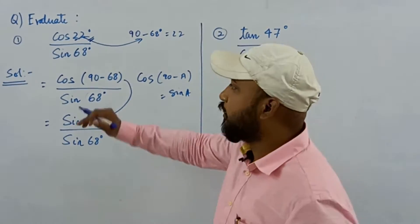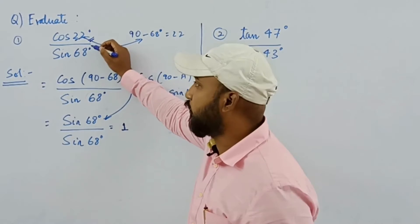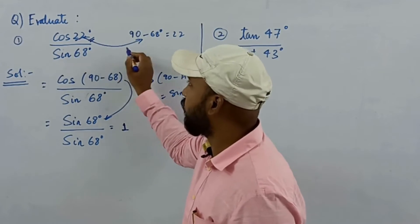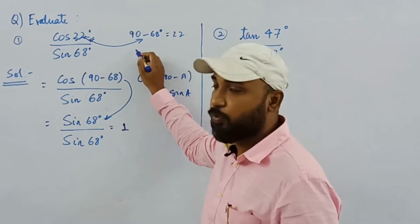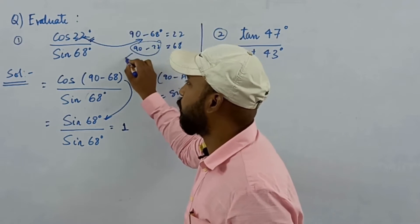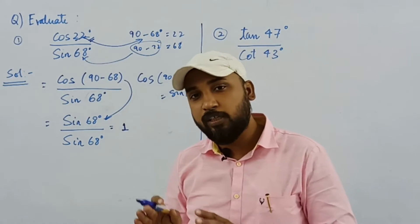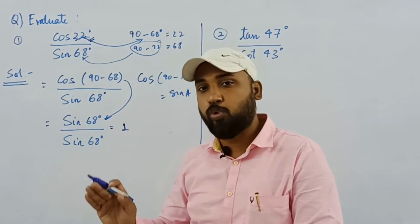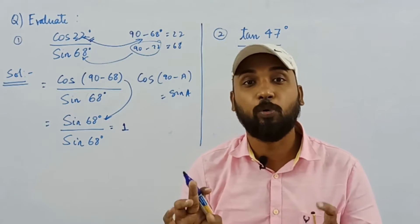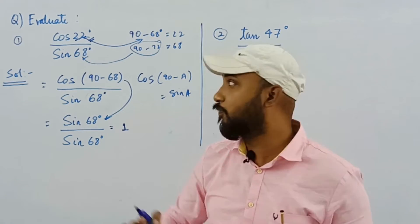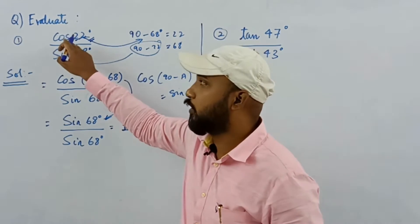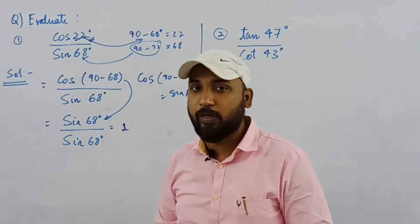There are two ways to solve this. Either convert 22 into 90 minus 68, or convert 68 into 90 minus 22 and substitute at the place of sin. Remember, we either convert cos to sin or sin to cos — we cannot do both at once. In this case, we converted cos to sin and got 1.